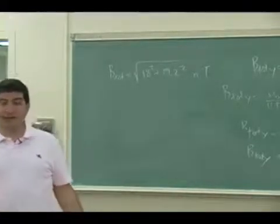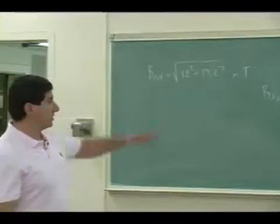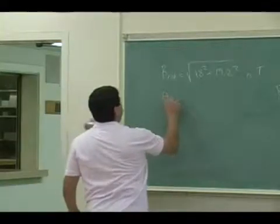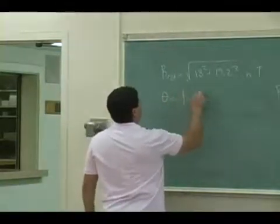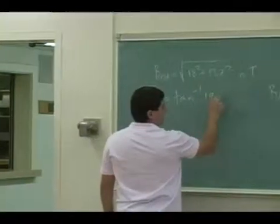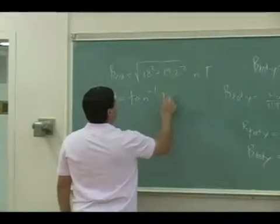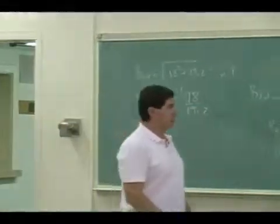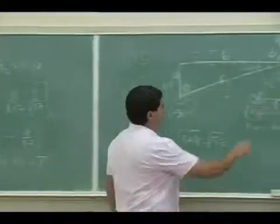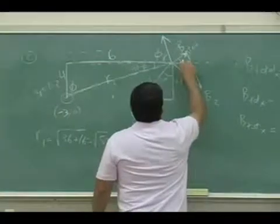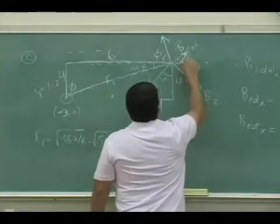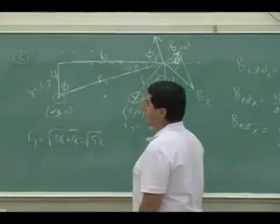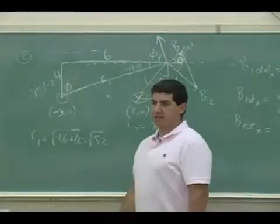And if I wanted to get the angle of that from the X axis, it's going to be a little less than 45 degrees — this angle right here. The angle that the B total makes with respect to the X axis is a little less than 45 degrees.